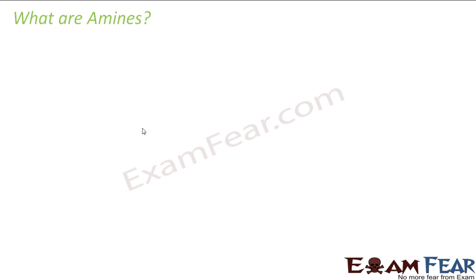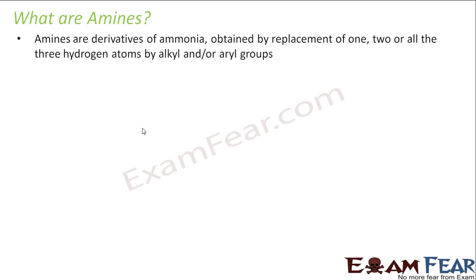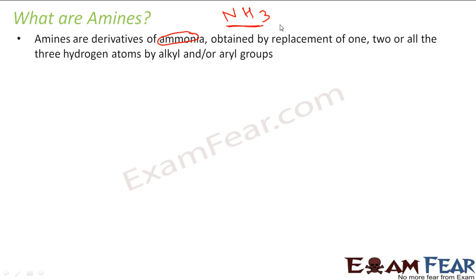Before we even start the chapter, the first question that comes to our mind is: what are amines? The answer is amines are derivatives of ammonia. Ammonia is NH3. So amines are nothing but derivatives of ammonia obtained by a replacement of one, two, or all three hydrogens.